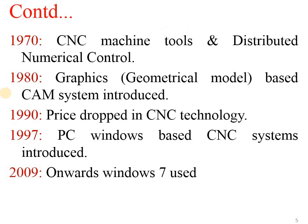In 1970, CNC machine tools and Distributed Numerical Control machines were invented. In 1980, a graphics and geometrical model based CAM system was introduced — software for developing 3D models, creating wireframe databases, solid model databases, and surface model databases. In 1990, prices dropped in CNC technology. In 1997, a PC Windows-based CNC system was introduced, allowing all numerical control machines to be handled and programmed using a personal computer.